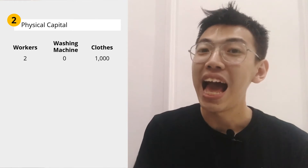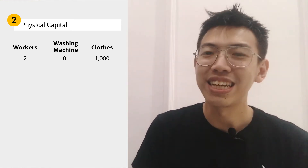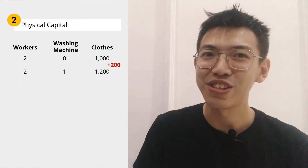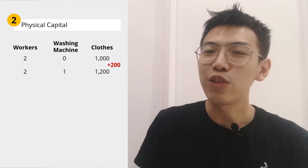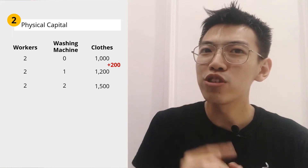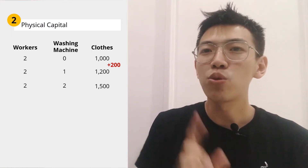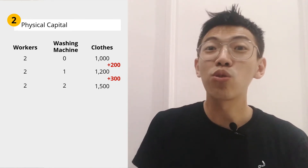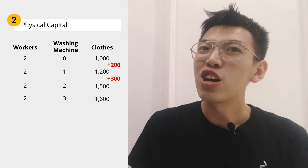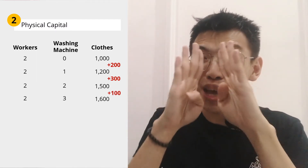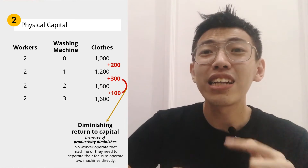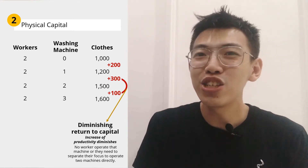For example, a company has two workers. Without any machine, they could wash 1,000 clothes. The company then purchases one washing machine, increasing productivity — they could wash 1,200 clothes, an increase of 200. Adding a second machine increases productivity further to 1,500 units, an increase of 300, because each worker can operate one machine. However, if the company adds a third machine, productivity could diminish — they could only produce 1,600 units, only an increase of 100 — because no worker can operate that extra machine, or workers must split focus between two machines. This is called diminishing return to capital.